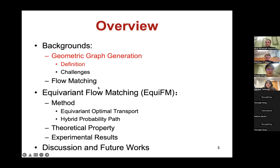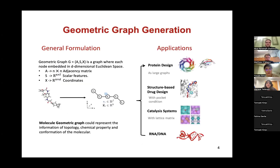Let's start with the definition of geometric graph generation. A geometric graph is described as a graph where each node is embedded in D-dimensional Euclidean space. There are generally three elements to describe geometric graphs: first, we have an adjacency matrix, which represents the topology information; then we have scalar features, usually vectors to describe the properties of the geometric graph or its elements; and we also have a coordinates matrix to describe the conformation of the geometric graphs in Euclidean space.